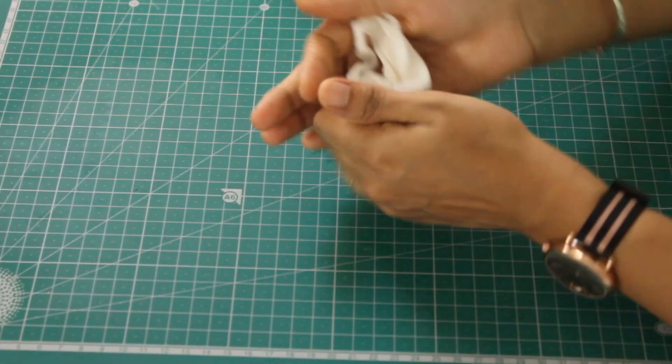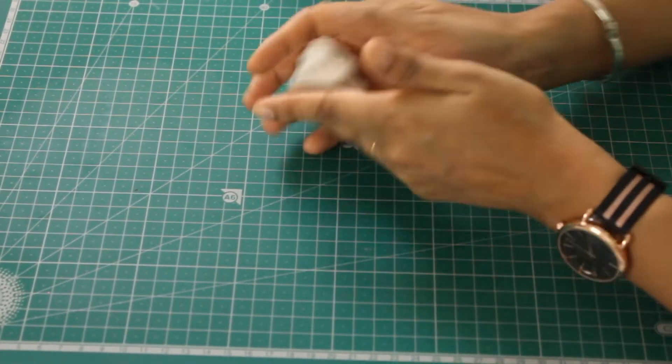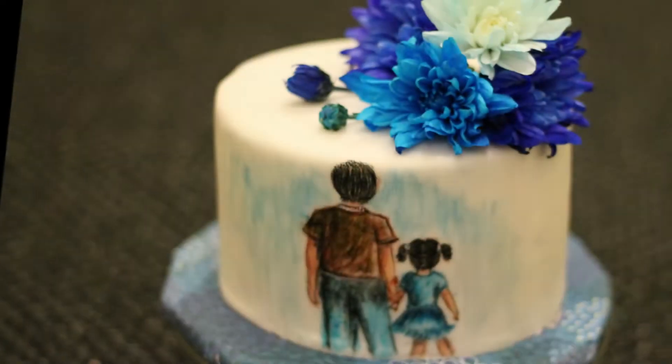Depending on the climate you live in, fondant kneading time will vary to get to a smooth stretchy texture. It is now ready to be used. You can use it as cake toppers or for covering a cake.